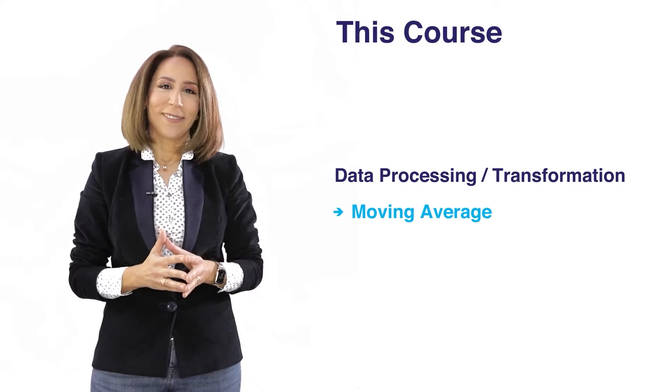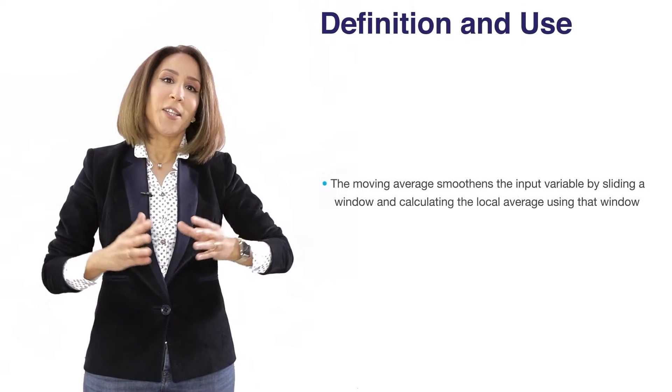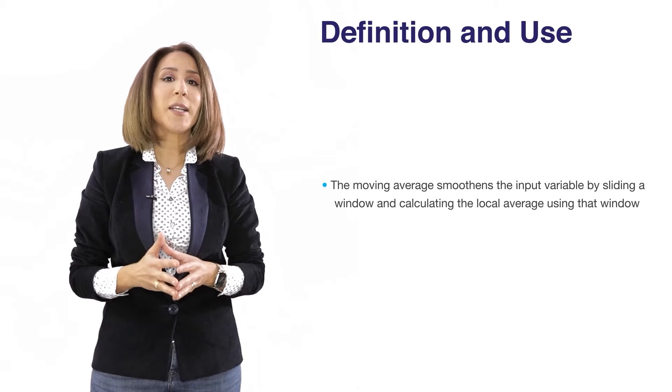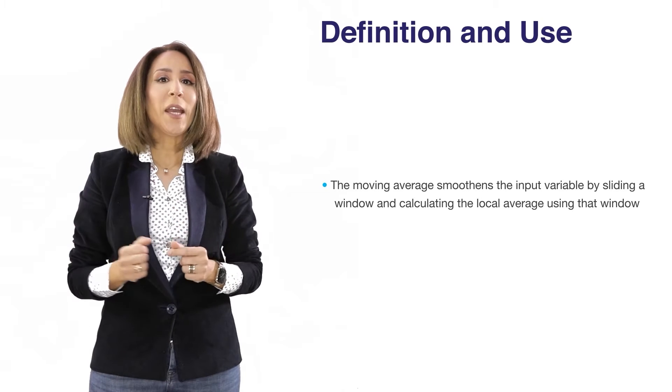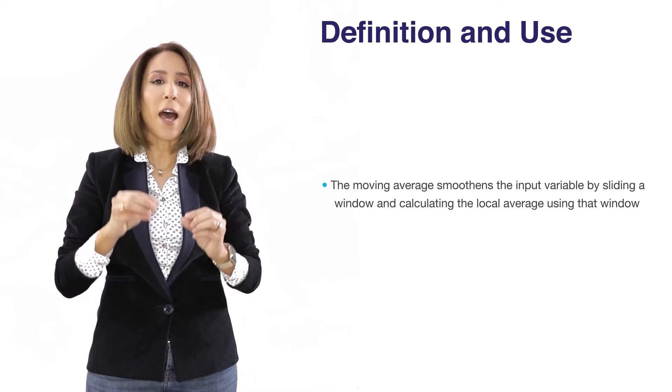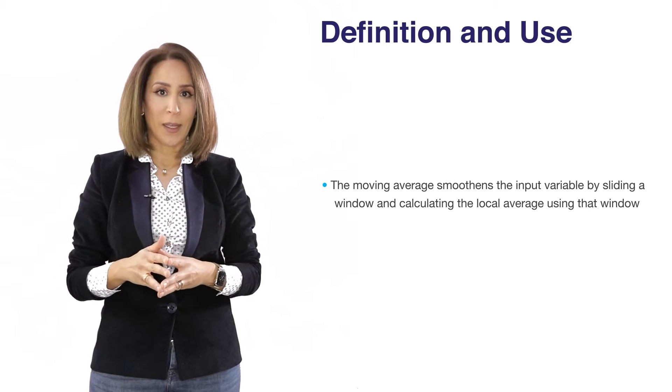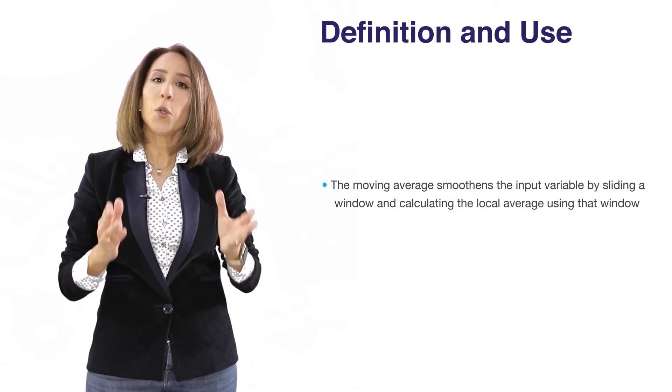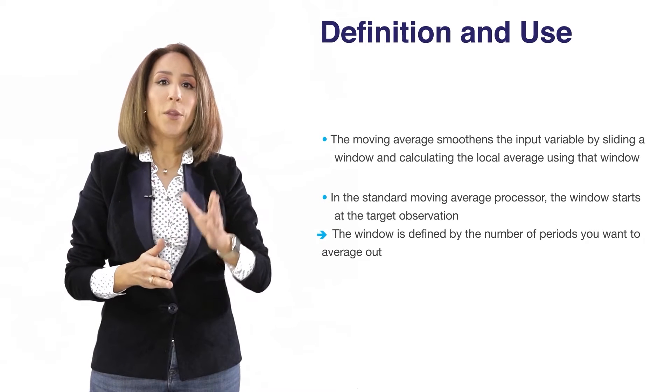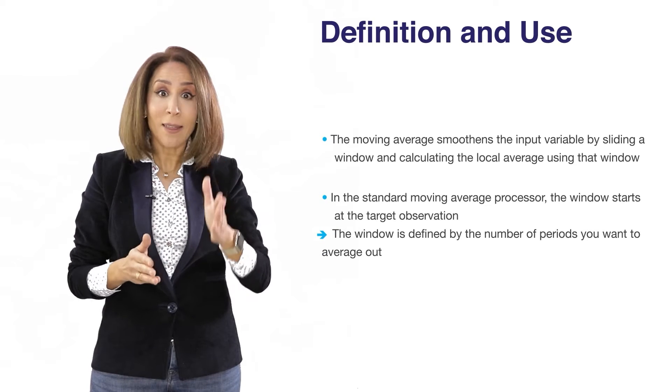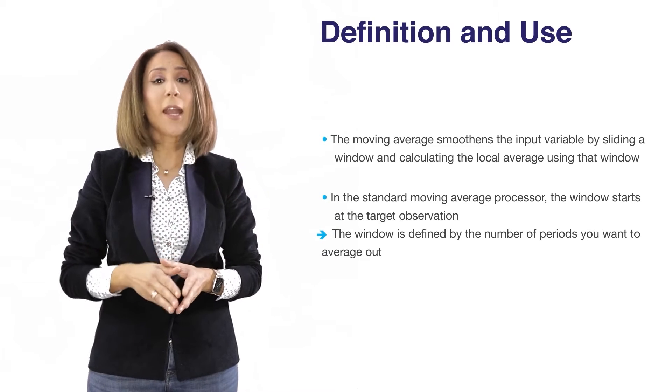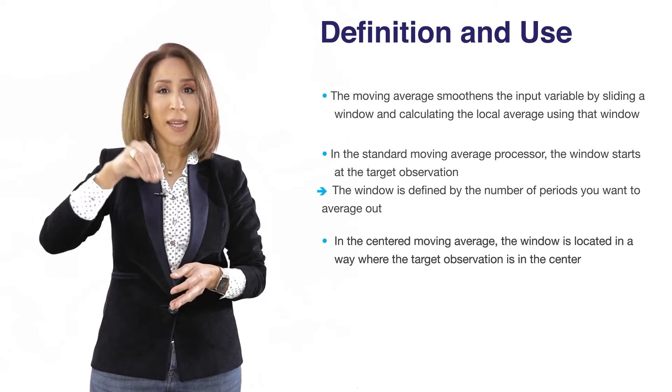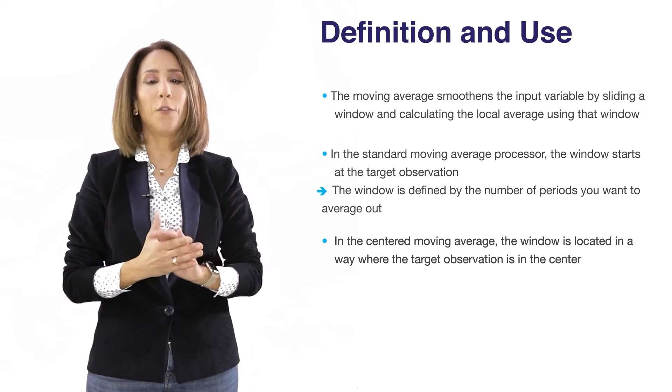Moving average is a technique used to smooth out your data. How it works is that you slide a window and compute the local average within that window. There are two variations: the standard moving average where the target observation is at the start of your window, and the centered moving average where your target observation is located at the center of the sliding window.